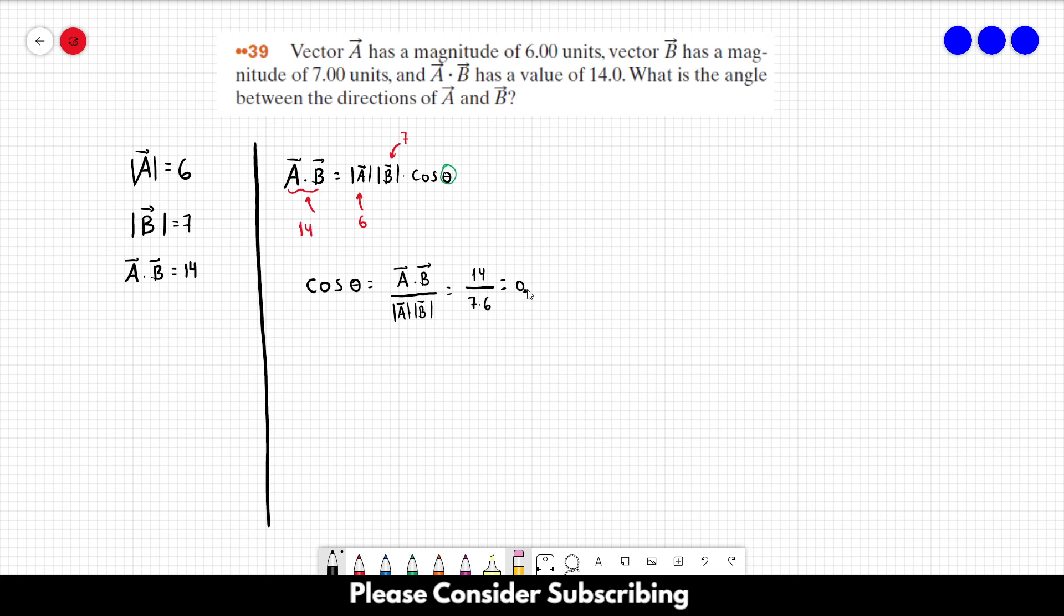But the answer we are looking for is not the cosine of the angle, it's the angle itself. So we have to apply the inverse function of cosine, which is cosine to the minus 1 of 1 third. This gives us the angle, which is 70.5 degrees. So this is the answer, 70.5 degrees.